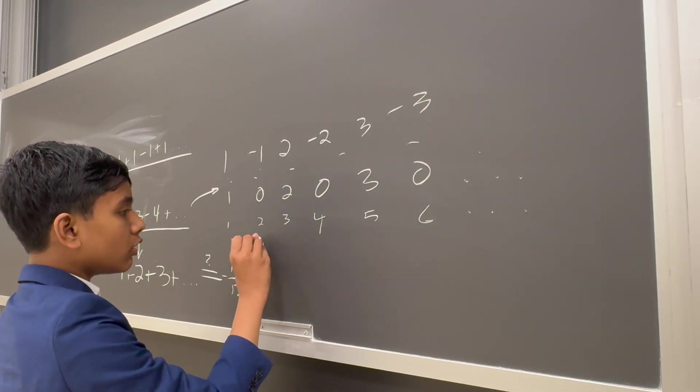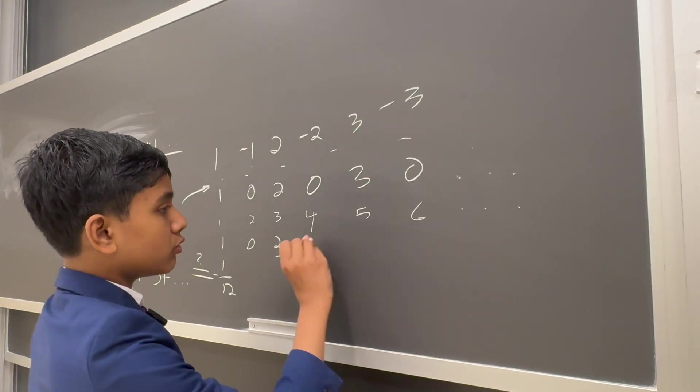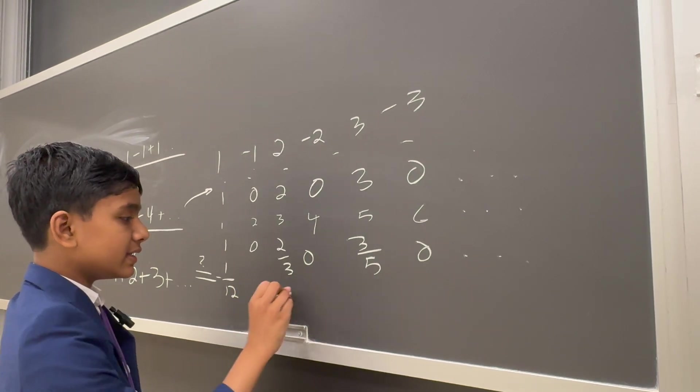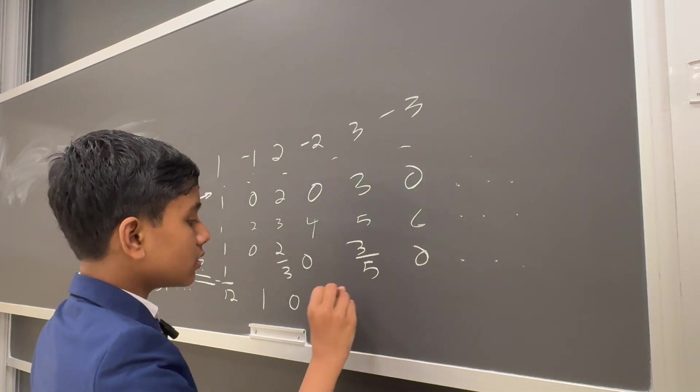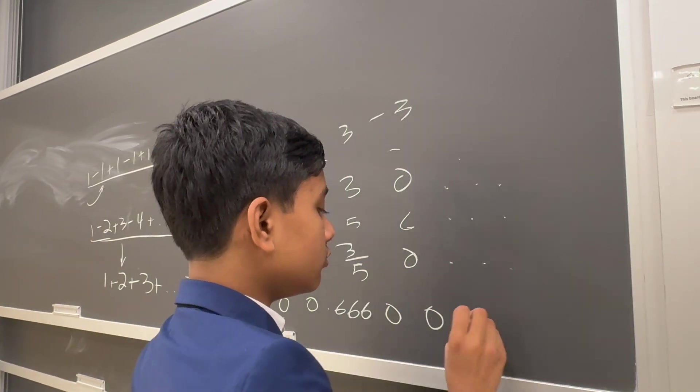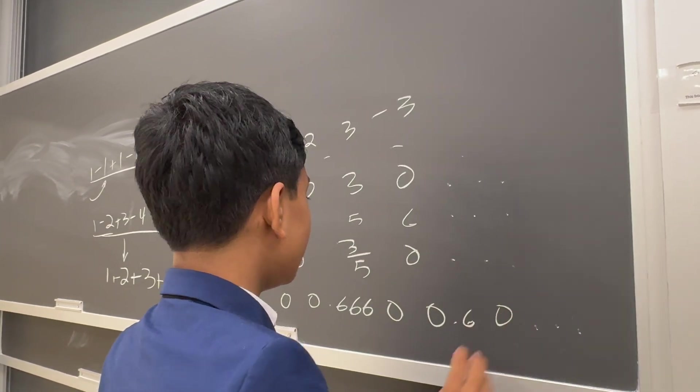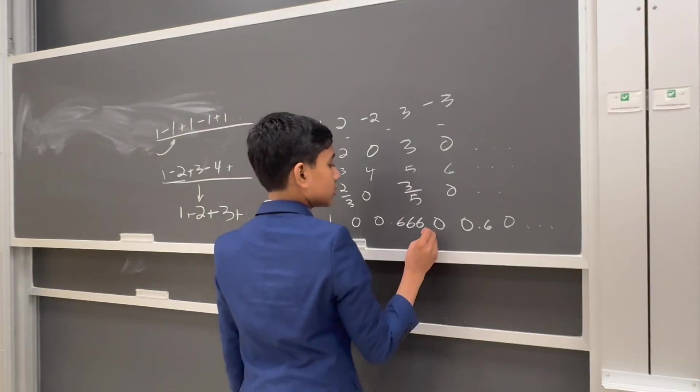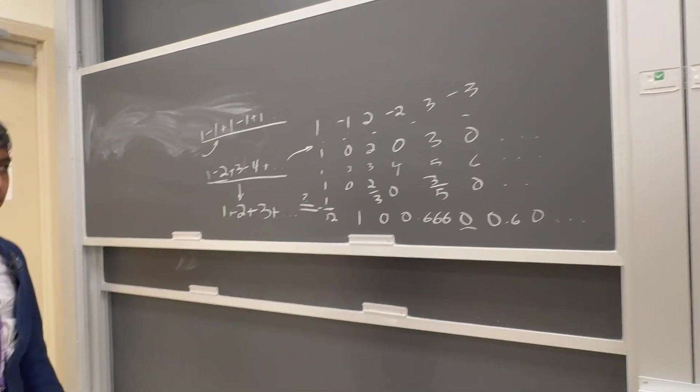So you get 1, 0, 2/3, 0, 3/5, 0. Now unfortunately, if you put these in decimal expansion, you will see that it continues oscillating and never really reaches anything below 1/2, except all of these weird-looking zeros.